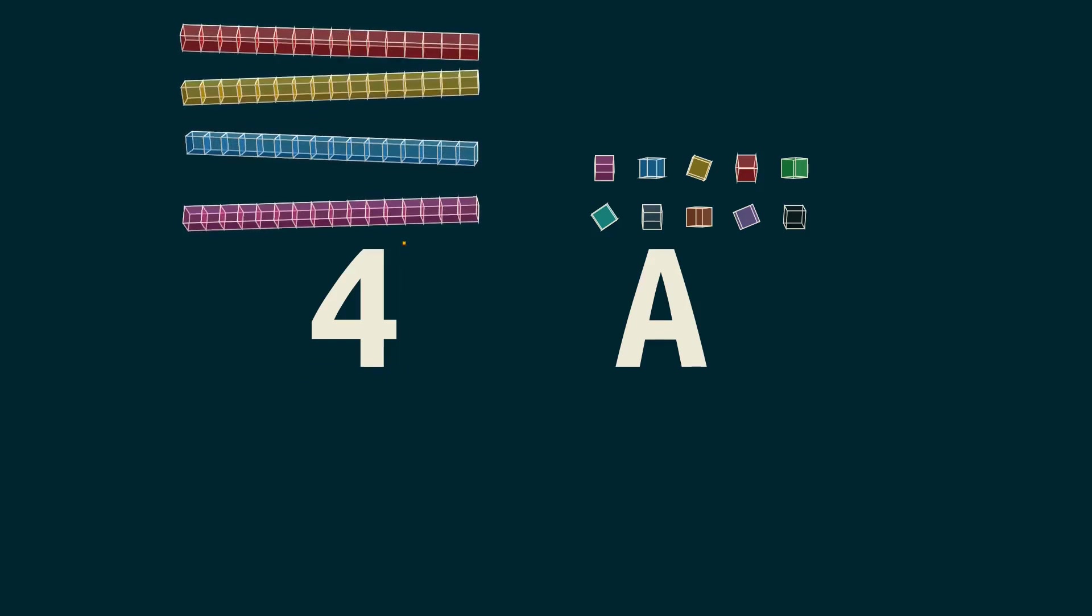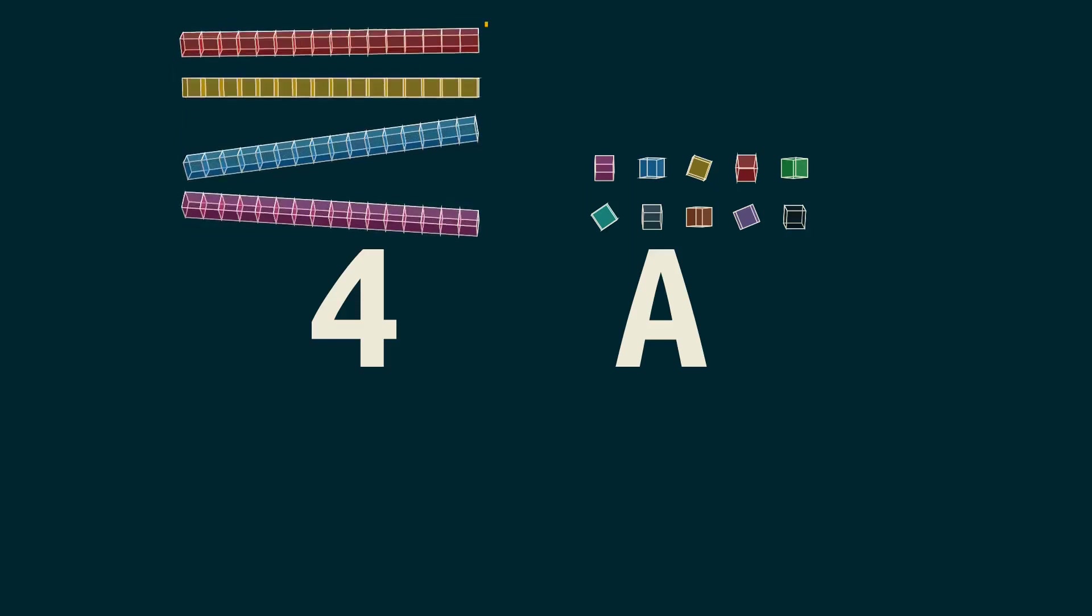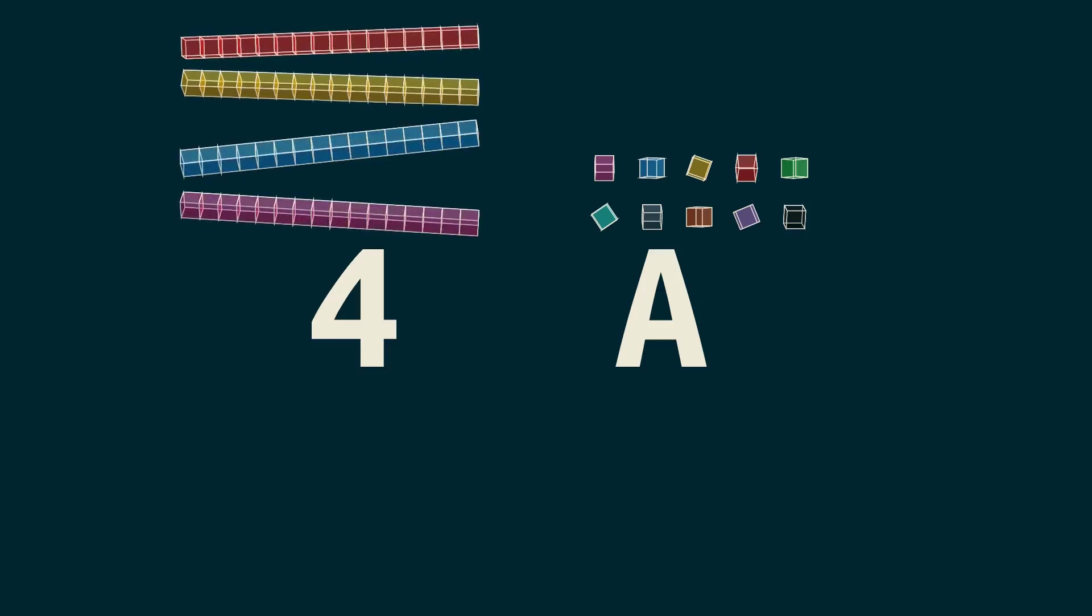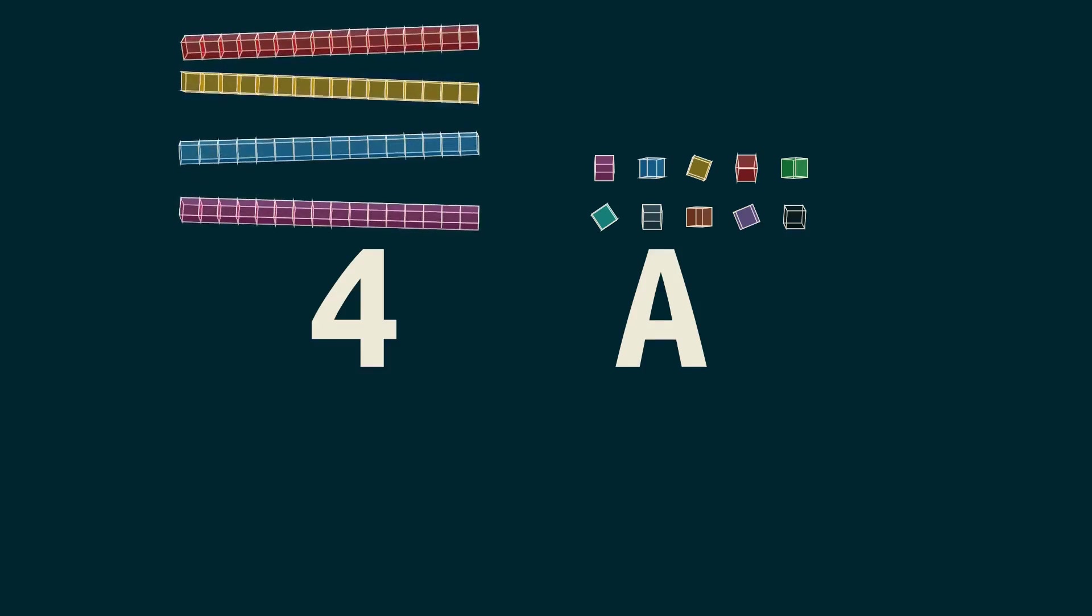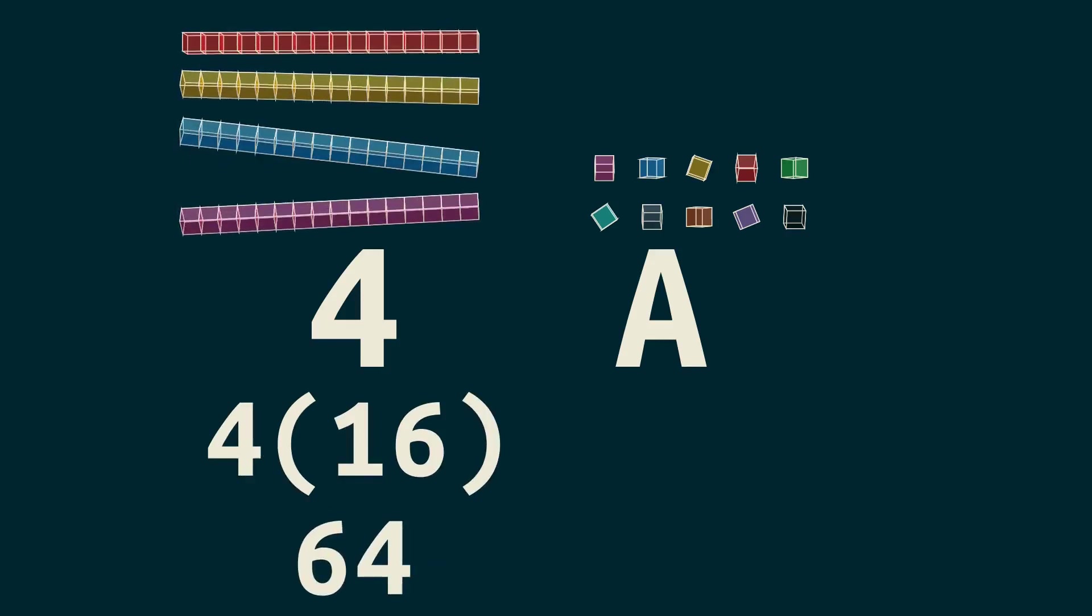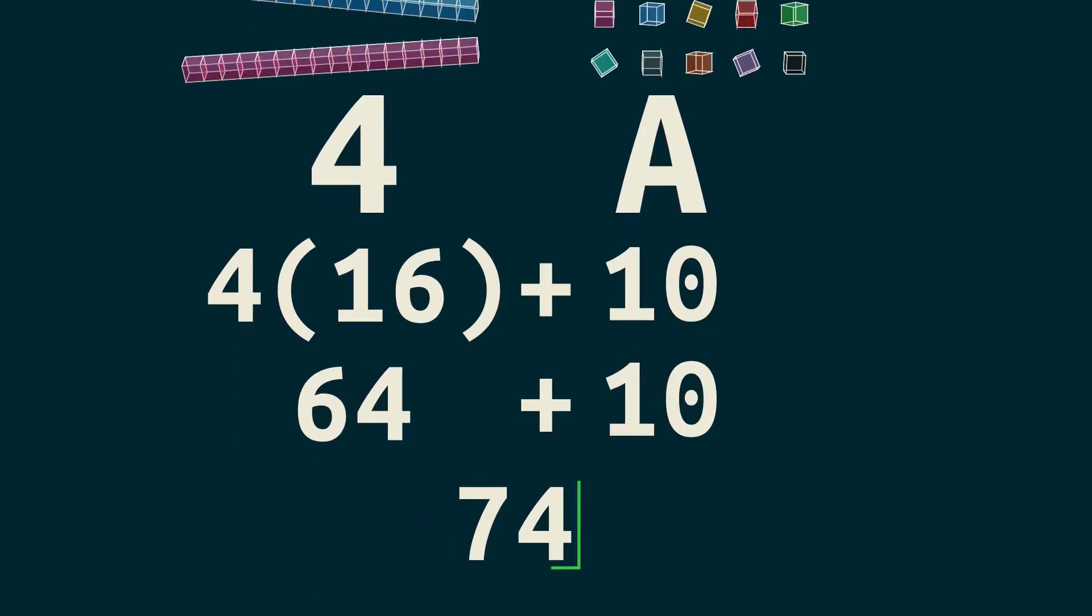So remember that this 4 isn't representing multiplication by A. It's representing how many of these long sticks we have. The sticks are 16 each. So to know how much that 4 is really worth, we multiply 4 by 16, which will be 64. Then recall that A is just how we write 10, so we'll add in 10. And that's it. It's 74.